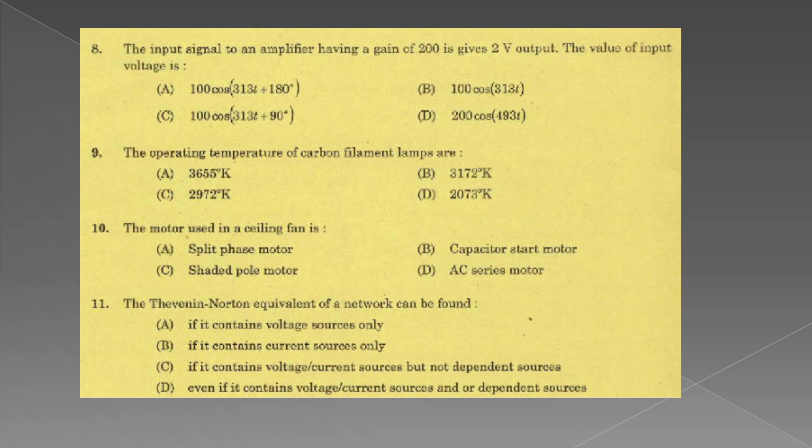The input signal to an amplifier having gain of 200 gives 2V output. Value of input voltage - this question has a term missing. The operating temperature of carbon filament is 2073 degree Kelvin. The motor used in ceiling fan is capacitor start motor.